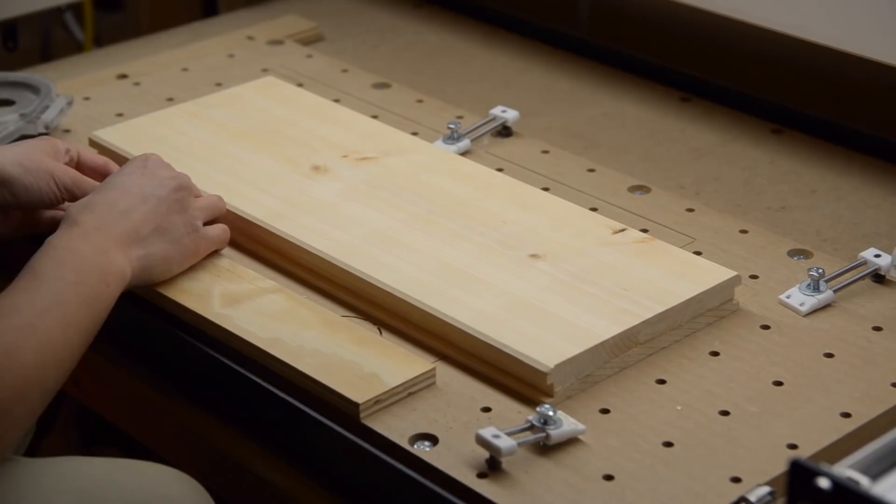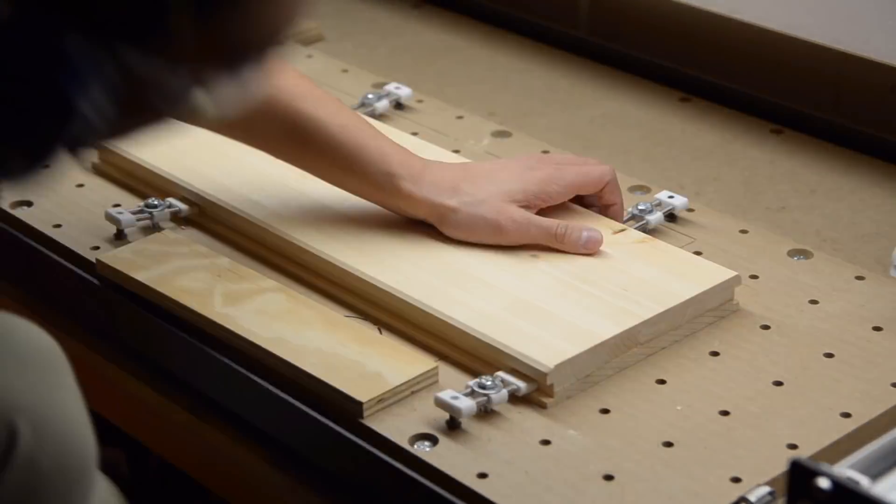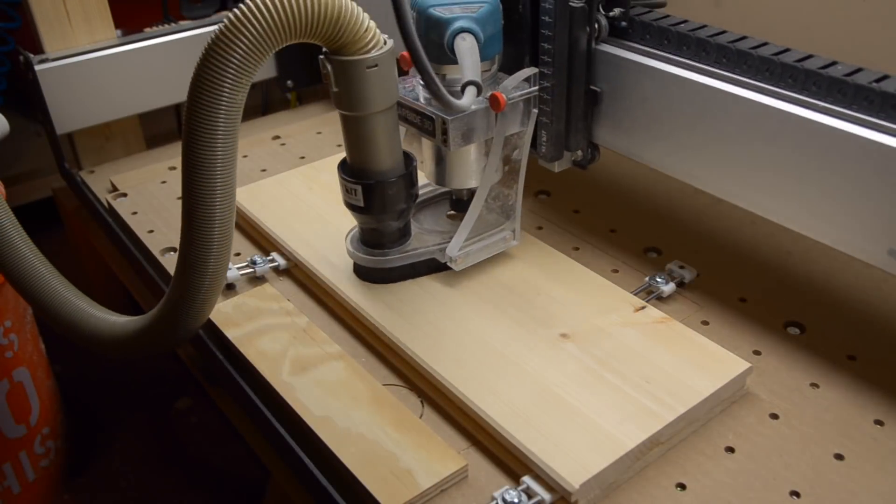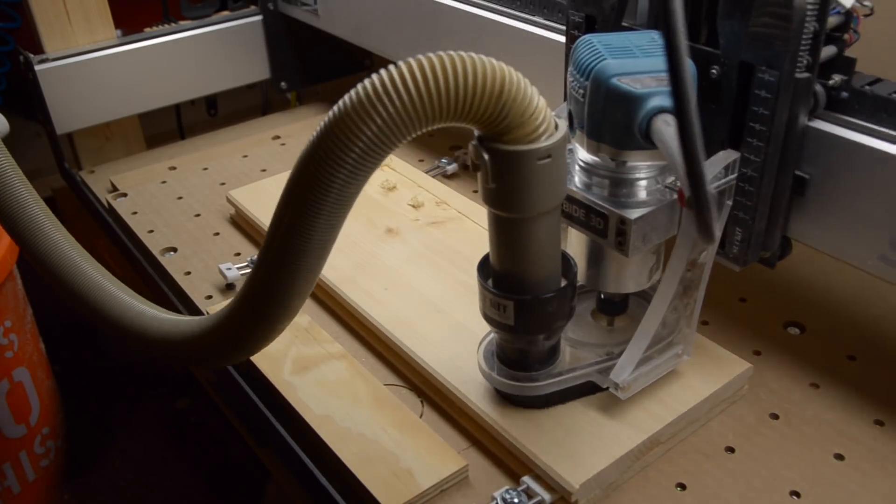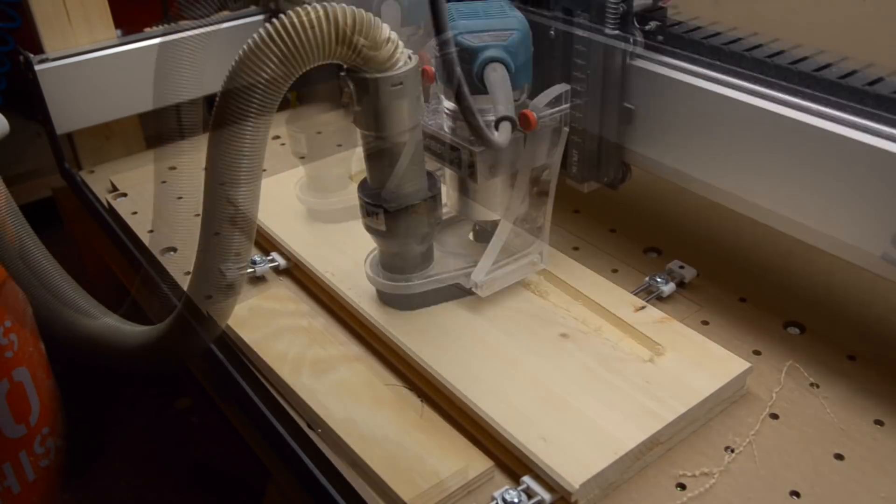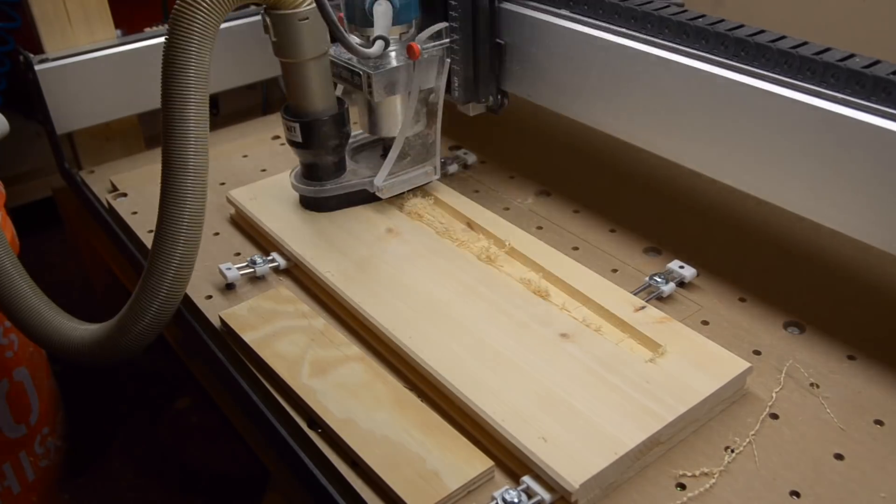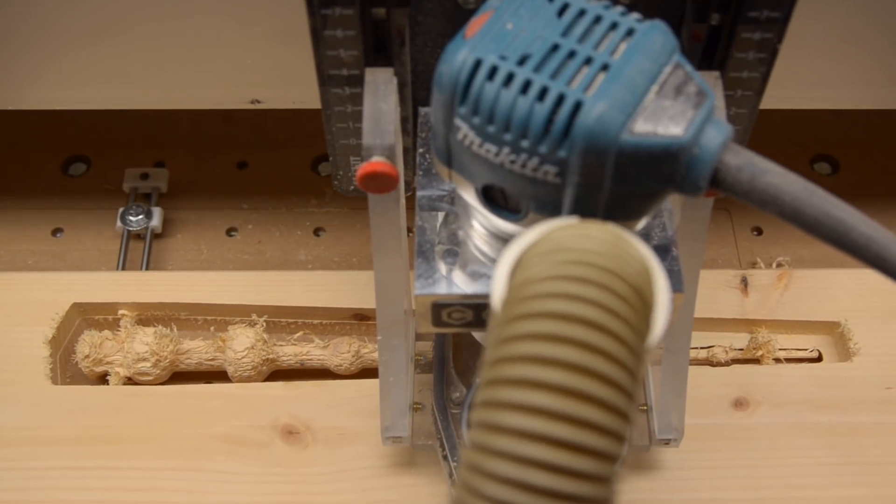I flipped my part over and started with adaptive clear number two. This one took about 10 minutes longer because of my more conservative settings. I really had no idea if this would work because I was afraid the tip of my wand would snap off. As it turns out, my adaptive toolpath finished without any drama.